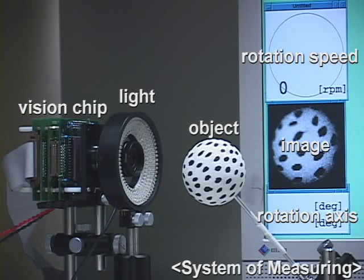Another application is the measurement of high-speed rotation. In this illustration, the rotation axis and the rotation speed are measured in real-time. The frame rate in this demonstration is 1 kHz.